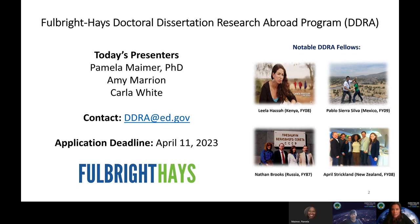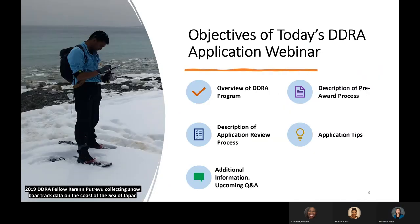Thank you all for joining us. Our contact information is DDRA at ed.gov. If you have any questions after reviewing this webinar, please contact Pamela, Carla, and myself at DDRA at ed.gov. The application deadline is April 11th, 2023, and we will reiterate that several times throughout the presentation. The objectives of today's webinar include an overview of the DDRA program, a description of the pre-award process, a description of the application review process, application tips, additional information, an upcoming live question-and-answer session, and other contact details.